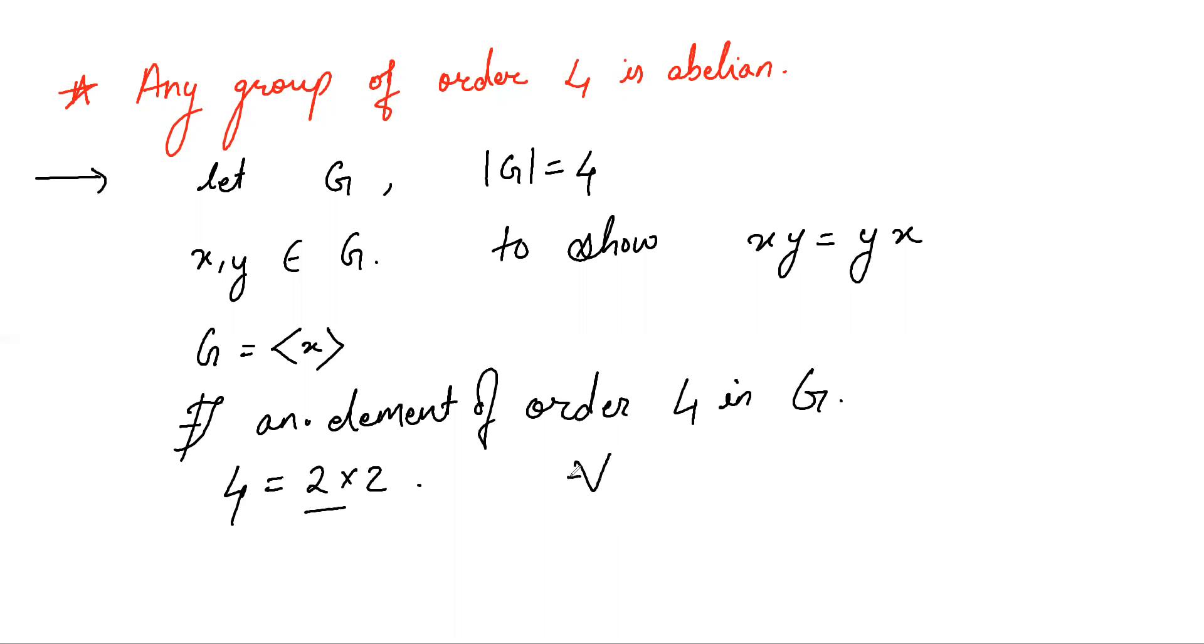So for all a belongs to G, a squared equals e. Now this implies xy squared equals e which implies xyxy equals e.